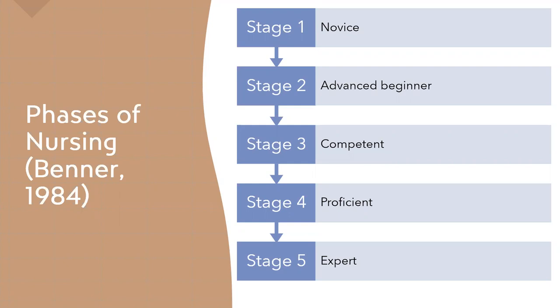Stage four is the proficient nurse, who quickly takes in all aspects of a situation and immediately gives meaning to clusters of assessment data. Proficient nurses are a resource for less experienced nurses and can see the big picture, coordinating services and forecasting needs of the patient or unit. Stage five, the expert nurse, uses intuition with a deep understanding of the situation — often recognizing a problem in the absence of clinical signs and symptoms. Not every nurse reaches expert level. They're typically consulted as resource nurses or nurse educators.